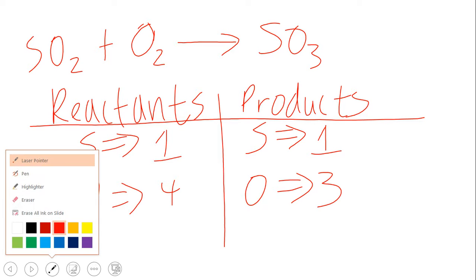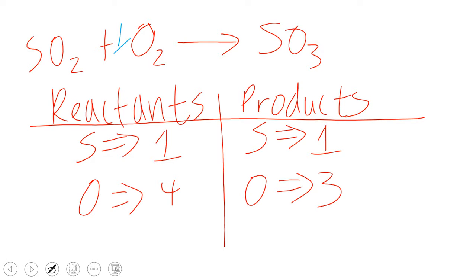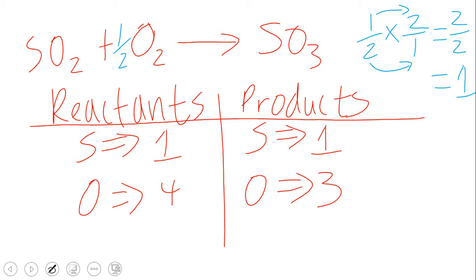What if we multiply this O₂ by one half? A half multiplied by two gives one. So that means multiplying one half by this two gives only one oxygen. Then you have that one oxygen plus the two from SO₂, so altogether you have two plus one, which is three. That fixes the problem — it's going to be three. And we have one for S on each side, so the equation is balanced.